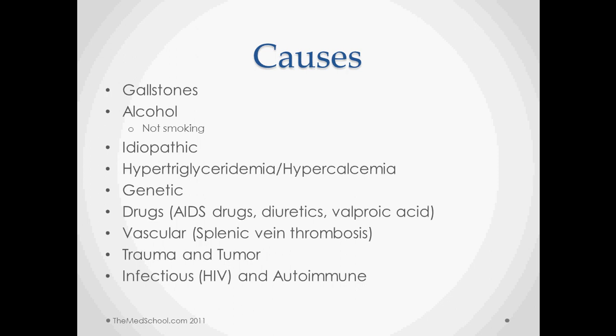The major causes of pancreatitis are gallstones, alcohol, and idiopathic — those three together make up almost all cases of acute pancreatitis. Gallstones cause pancreatitis because the stone gets stuck in the common duct and backs up into the pancreas. Alcohol damages the pancreas directly. Smoking was once thought to be associated but is more just associated with alcohol use and is not independently associated with pancreatitis.